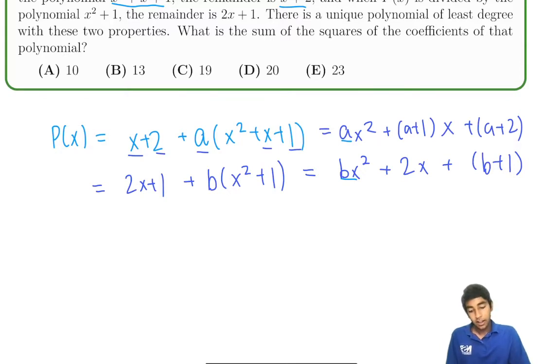Because what if this a term here is something like 5x or something? Because a is not necessarily a constant. It could be something like 5x. So if a is something like 5x, then now we've got more x squared terms. So we can't do that.